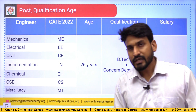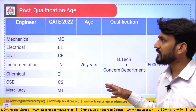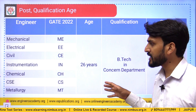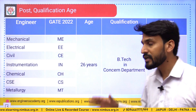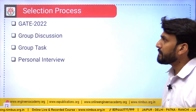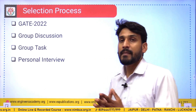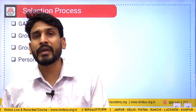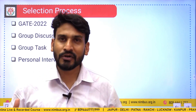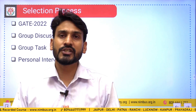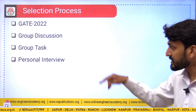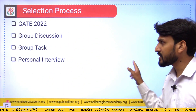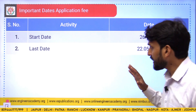Yeh eligible branches hain - agar aapne GATE 2022 in branches se diya aur aapka score achha hai to definitely aap is form ko miss na karein. Selection process mein pehle GATE 2022 ke score pe aapko shortlist kiya jayega, phir Group Discussion aur Group Task ke liye bulaya jayega, aur further round jo hai wo Personal Interview hoga. Yeh hai is recruitment ka selection process.